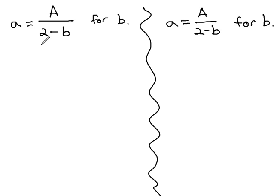We know to start a problem off that has fractions in it, we can clear the fraction by multiplying by the least common denominator. That 2 minus b is a factor making up the denominator, and so we'll multiply it on both sides.